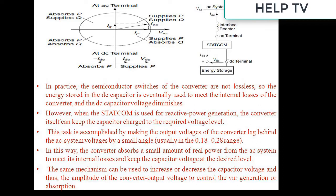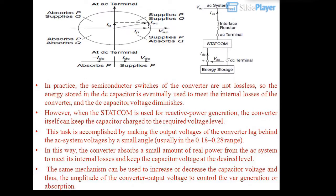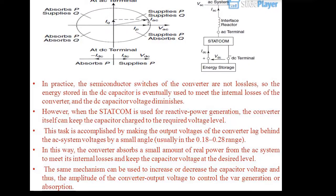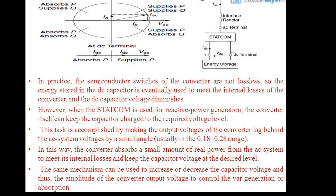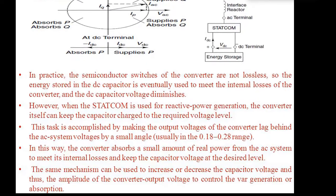In practice, the semiconductor switches of the converter are not lossless, so the energy stored in the DC capacitor is eventually used to meet the internal losses of the converter and the DC capacitor voltage diminishes. However, when the STATCOM is used for reactive power generation, the converter itself can keep the capacitor charged to the required voltage level. This is accomplished by making the output voltages of the converter lag behind the AC system voltages by a small angle, usually in the 0.18 to 0.28 range.